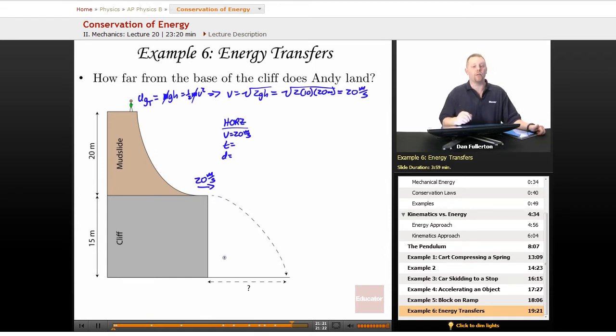To figure out how long he's in the air, though, we have to look at vertical motion. Vertically, his initial velocity is zero. His final velocity, we don't know. Delta y is going to be 15 meters from the time he goes off the mudslide to hitting the ground at the bottom of the cliff. So that's 15 meters. We'll call down the positive y direction again.